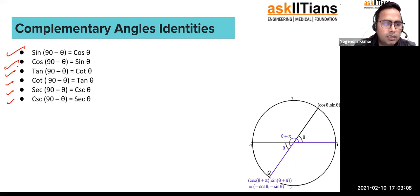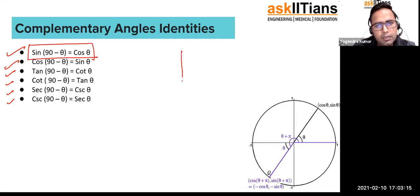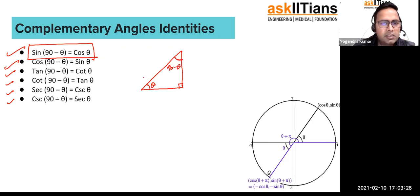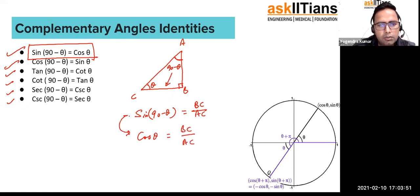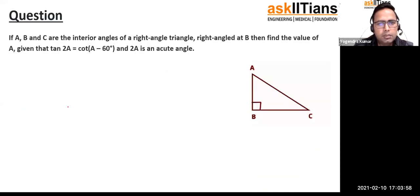Let me show the proof again. In a right angle triangle, if one angle is θ, then the other acute angle is 90° − θ by the angle sum property. For angle (90° − θ), the opposite side is BC, so sin(90° − θ) = BC/AC. For angle θ, cos θ = base/hypotenuse = BC/AC. Since both expressions equal BC/AC, sin(90° − θ) = cos θ is proved.